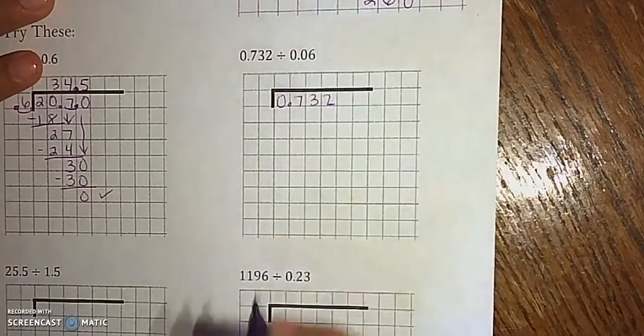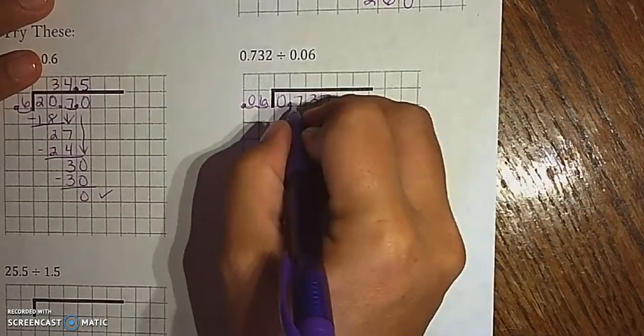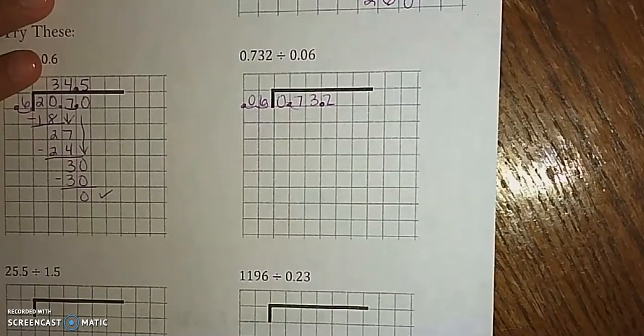First number in the house, second number outside. That jumps twice, so that jumps twice. That's my new spot.